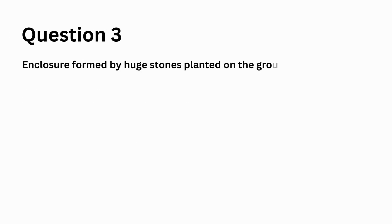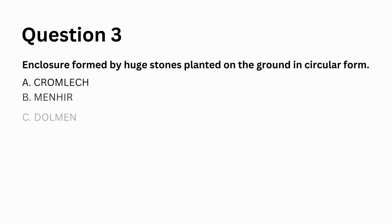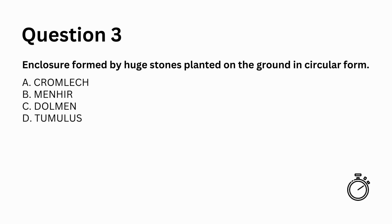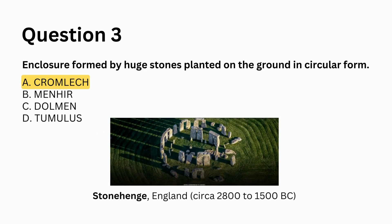Enclosure formed by huge stones planted on the ground in circular form: a. Cromlec, b. Menher, c. Dolmen, d. Etimulus. Answer: a. Cromlec. Stonehenge, in England, circa 2800 to 1500 BC, is considered the most spectacular and imposing of monolithic monuments.